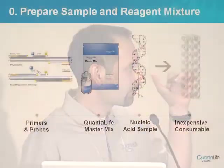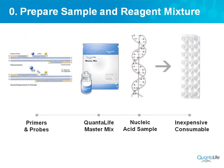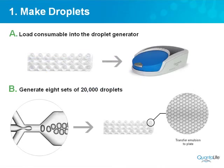To go into a bit more detail: before you can do anything, you need to make a reagent mix. You take your primers and probes, you take the QuantaLife master mix — which we supply and is optimized for working with droplets — you take your sample, mix them, and put them into this single-use consumable. This prevents any potential cross-contamination, and you can load up to eight samples at a time in this consumable.